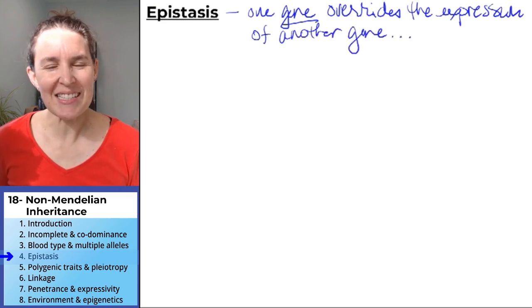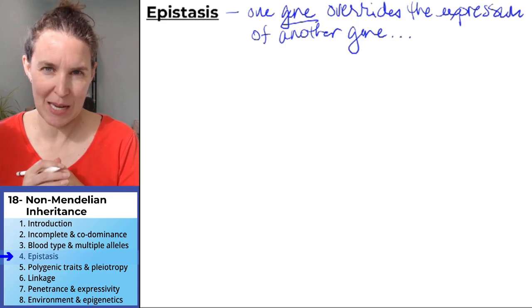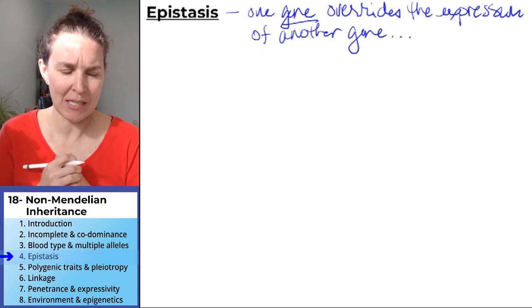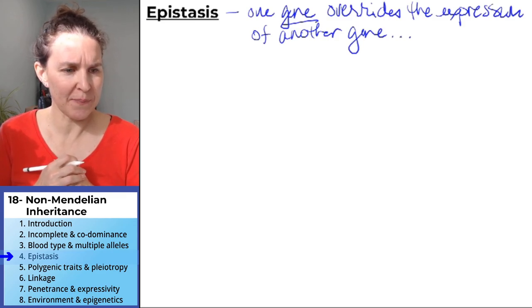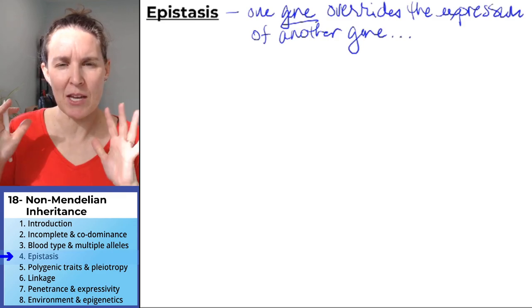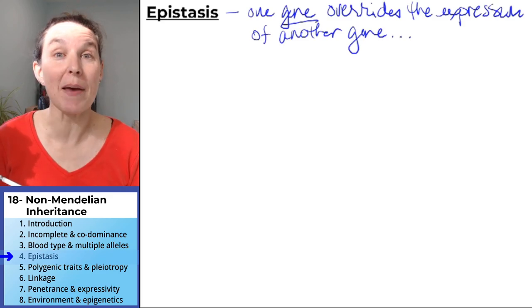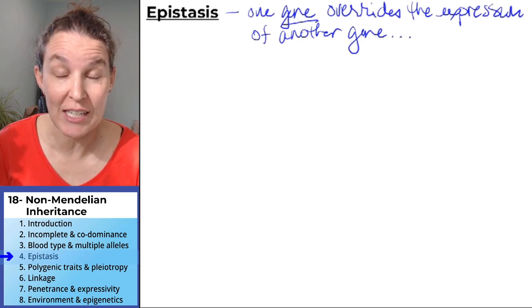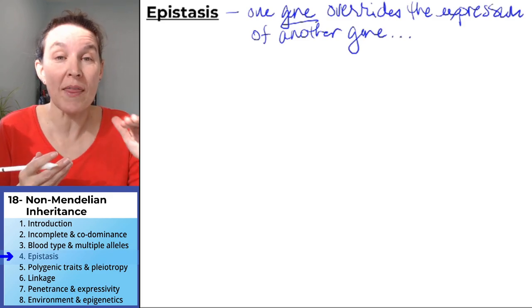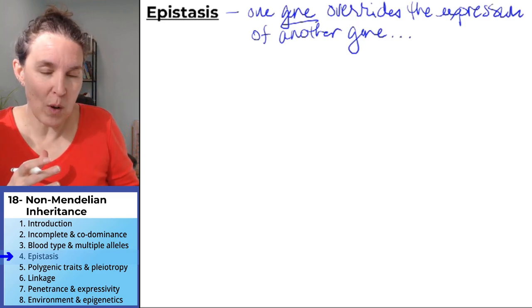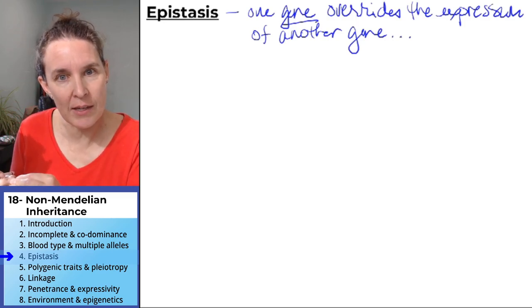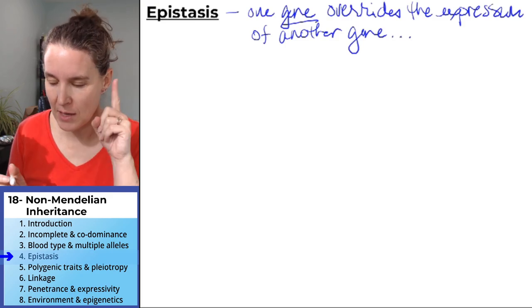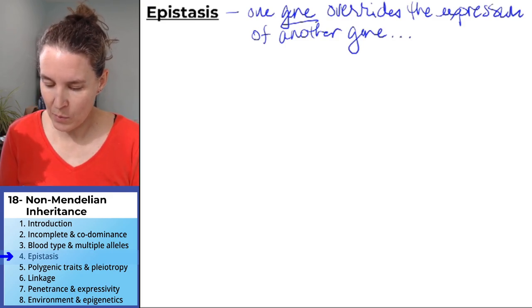I bet you can think of examples like albino critters. I bet you can think of analogies in your world where one thing, the expression of one thing is dependent on the expression of something else.